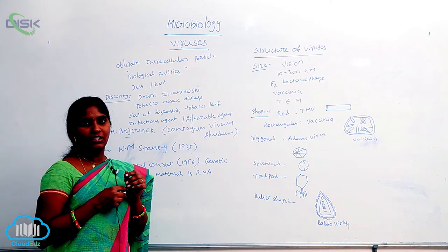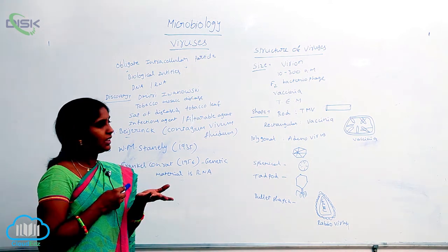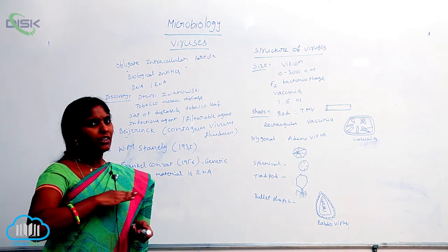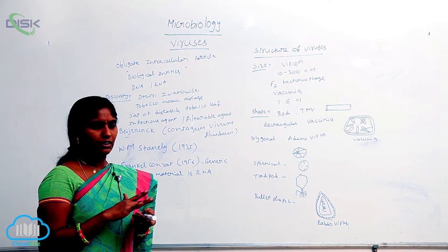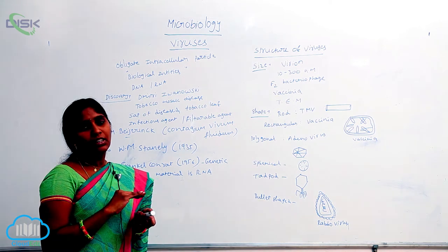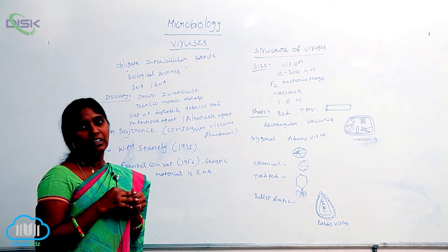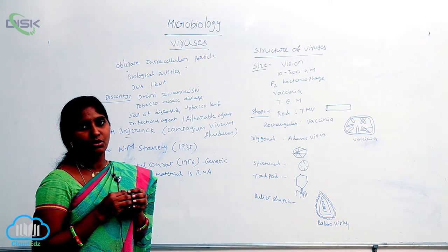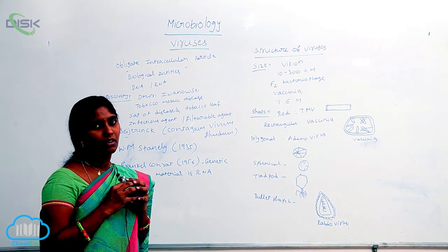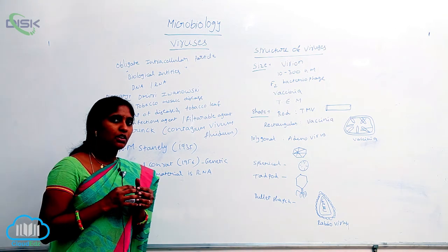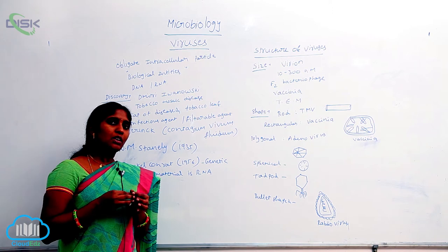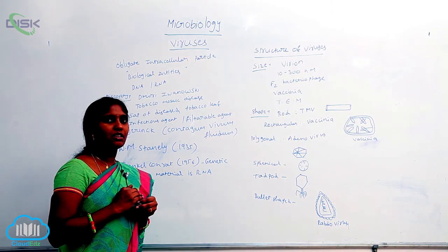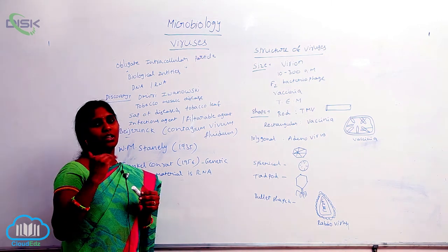After filtration, he collected the filtrate and used it to infect healthy leaves. When he rubbed that filtrate juice onto the healthy leaves, the healthy leaves also developed mosaic disease. He observed that even after microfiltration, some agents were still causing disease in the healthy plants.